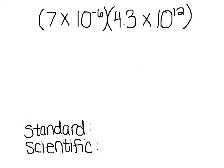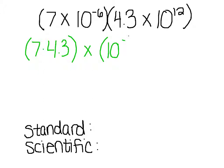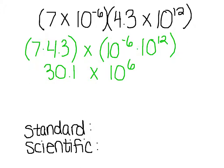Alright, I want you to pause the video and try this problem on your own. Assuming you did this correctly, you probably put 7 times 4.3, times 10 to the negative 6 times 10 to the 12th. Well, 7 times 4.3 is 30.1, and then we keep the base and add the exponents, giving us 30.1 times 10 to the 6th. Hopefully you said this is not in proper scientific notation.